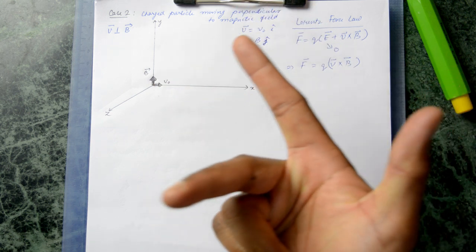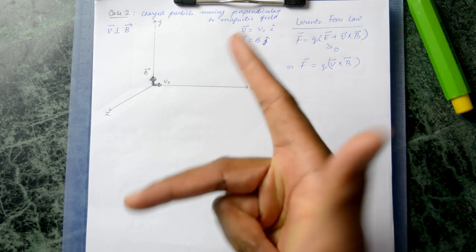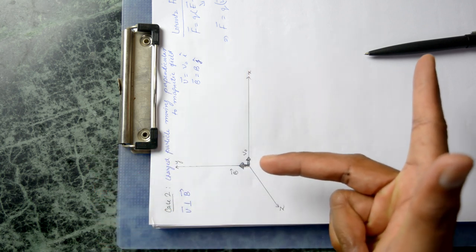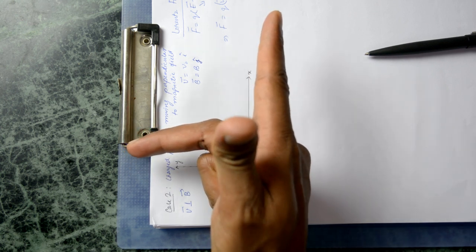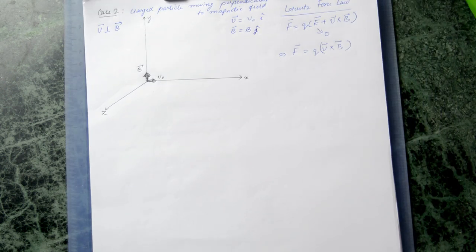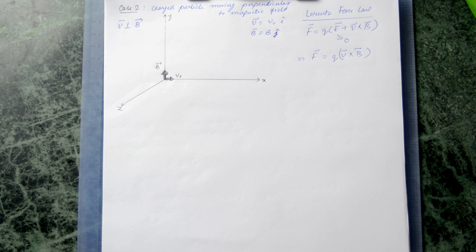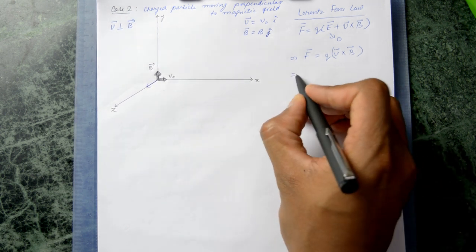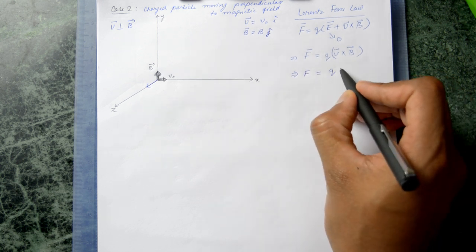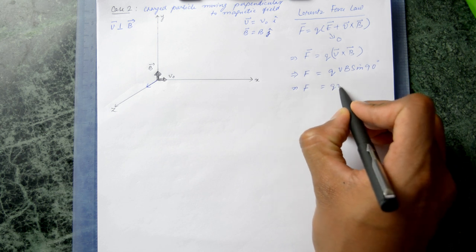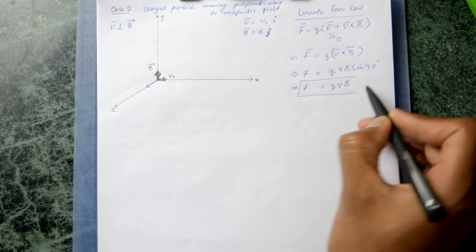Orient your right hand with the index finger pointing in the direction of velocity and the middle finger pointing toward the magnetic field — your thumb will point in the direction of the force, which is along the z-axis. If the velocity is along the x-axis and the magnetic field along the y-axis, the force is along the z-axis. The magnitude is |F| = qvB sin(90°) = qvB.